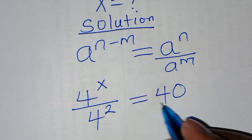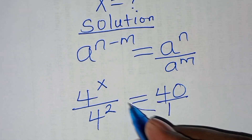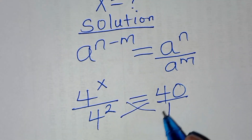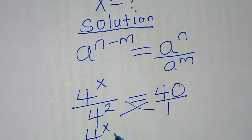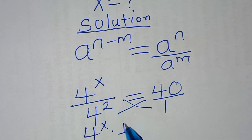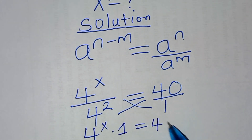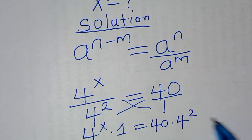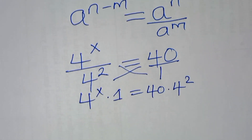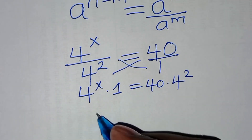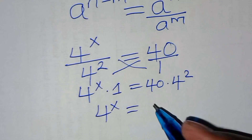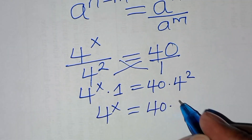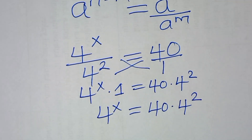And since 40 is a whole number, it's over 1. So let's cross multiply. We'll have 4 to the power x times 1, which is equal to 40 times 4 squared. So here we have 4 to the power x equal to 40 times 4 to the power 2.